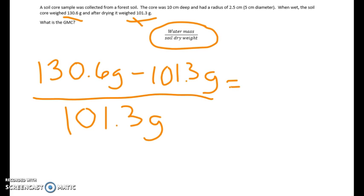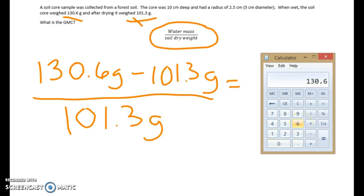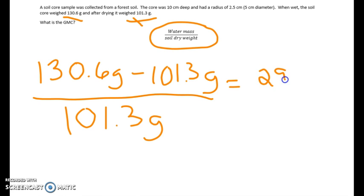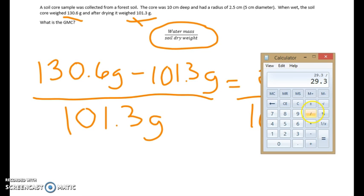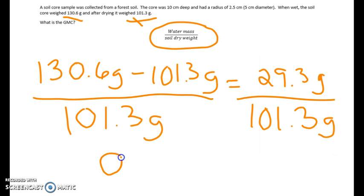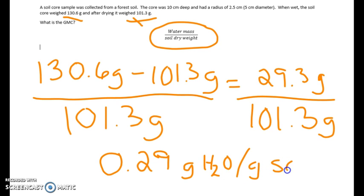Using the calculator: 130.6 minus 101.3 gives us a water mass of 29.3 grams. Then we divide that by the dry weight of 101.3 grams, which gives us a gravimetric moisture content of 0.29 grams of water per gram of soil. We can also express this as 29% water in the soil.